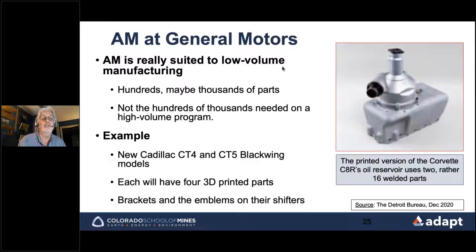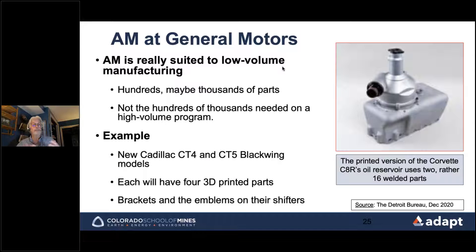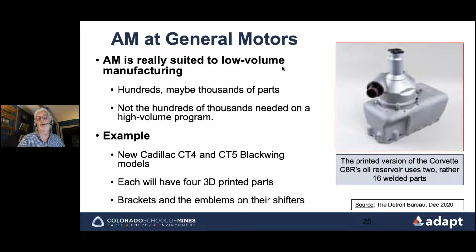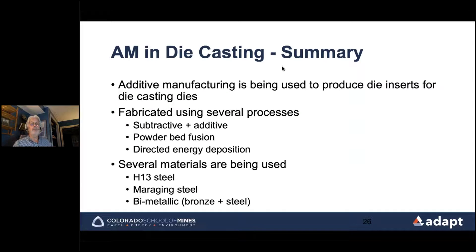General Motors believes additive manufacturing is really suited to low-volume manufacturing — hundreds to low thousands of parts per year, but certainly not the hundreds of thousands needed for high-volume projects. Examples include four 3D printed parts in new Cadillac models such as brackets and emblems, and for the Corvette C8R the printed oil reservoir uses two printed parts rather than 16 welded parts.